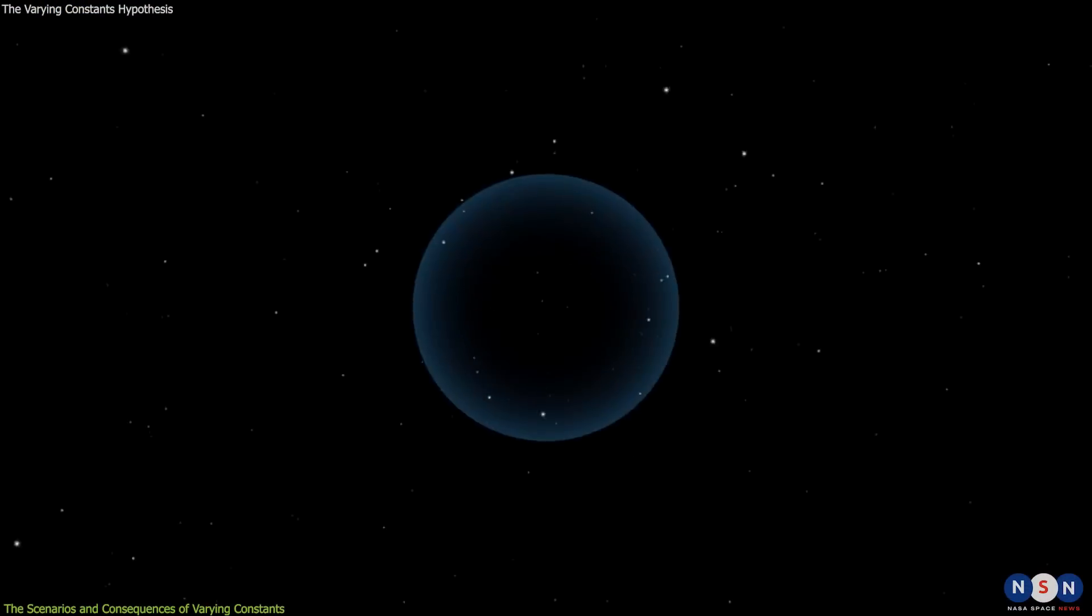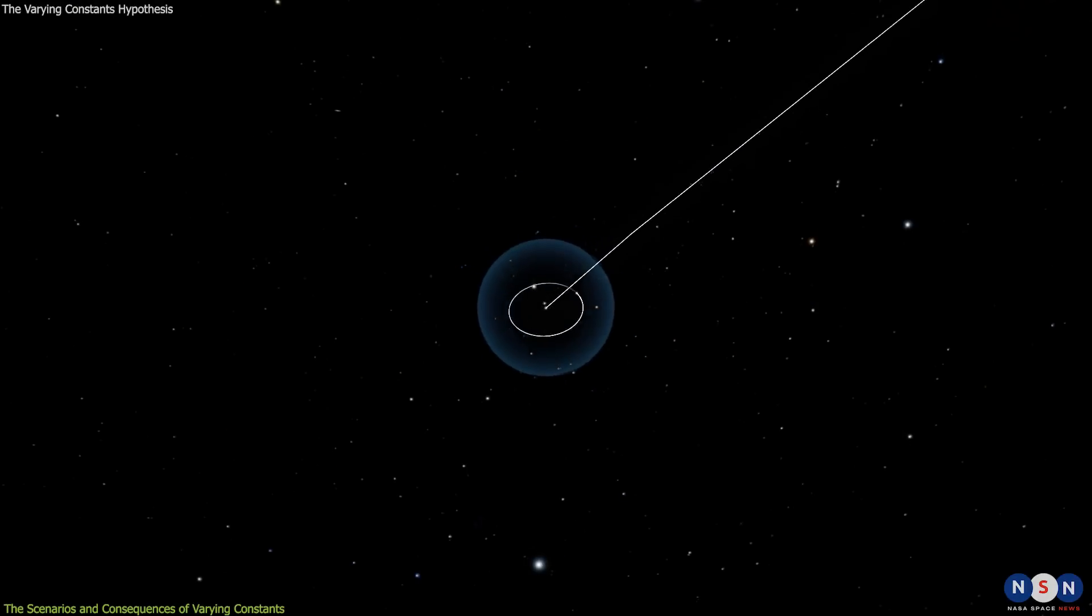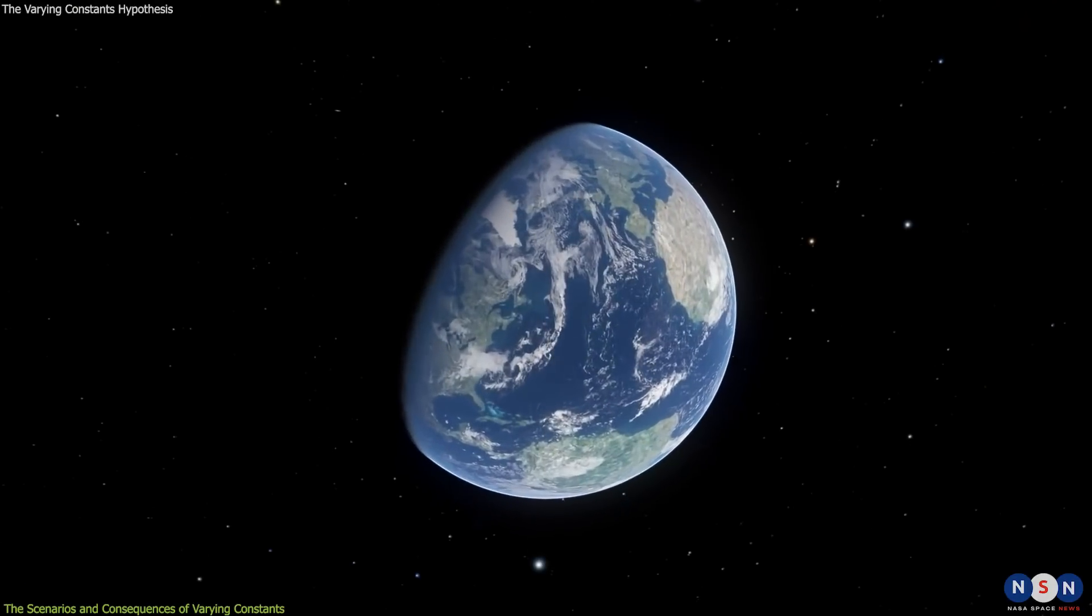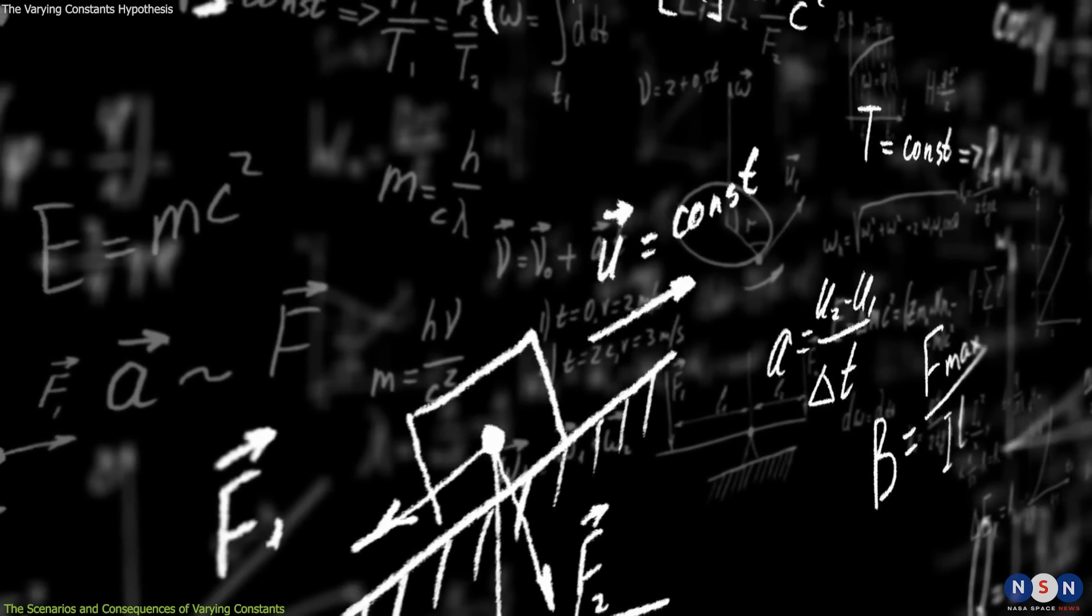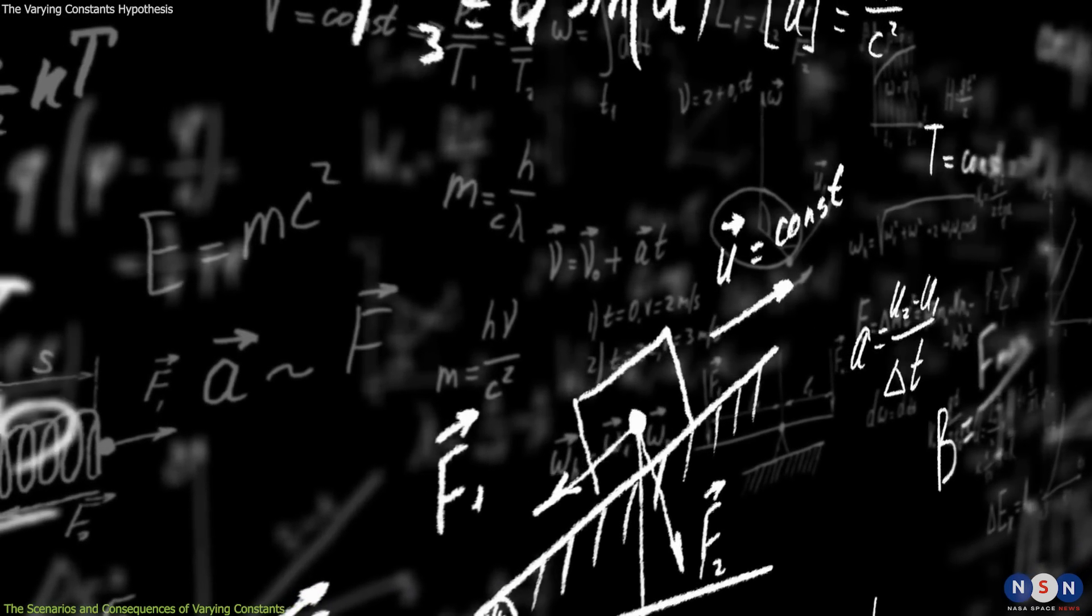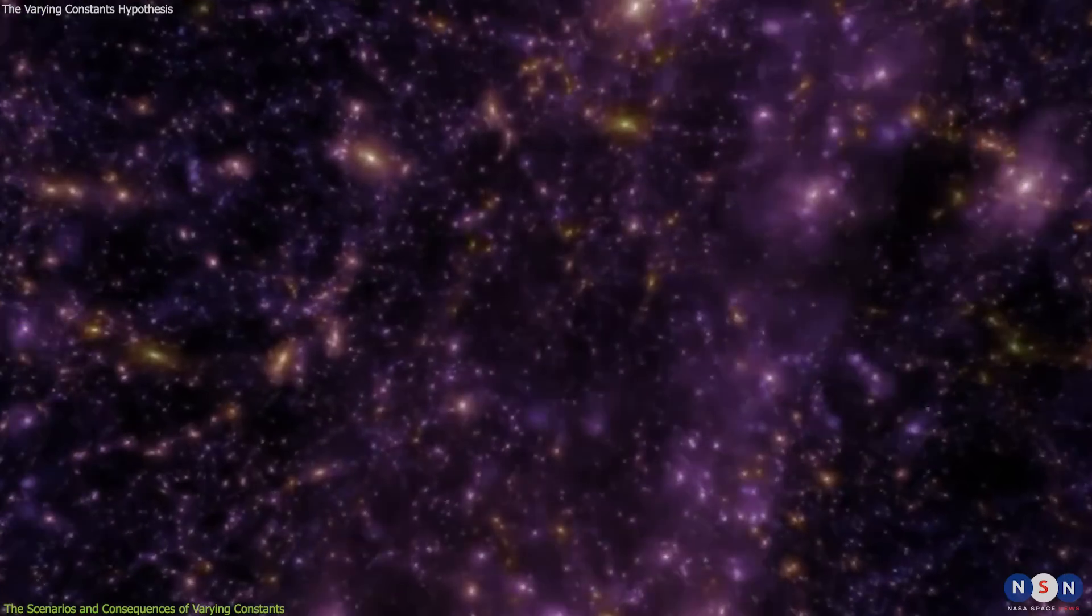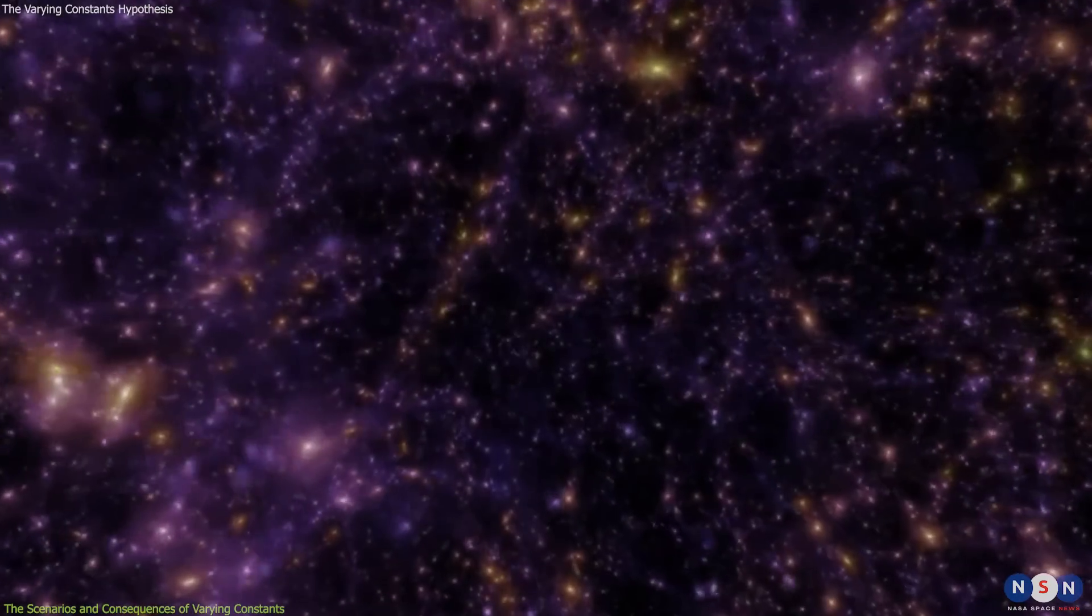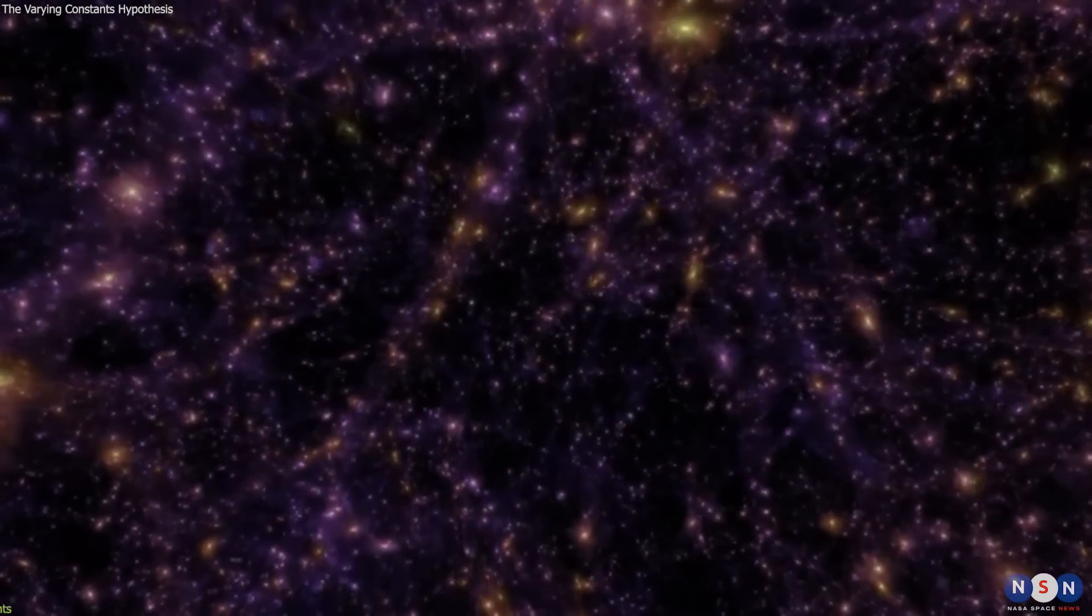These examples show that varying constants of nature would have profound and dramatic effects on our reality and our place in it. They would challenge some of the most basic and fundamental assumptions we make about nature and its laws. They would also open up new possibilities and perspectives for exploring and understanding nature at different scales and domains.